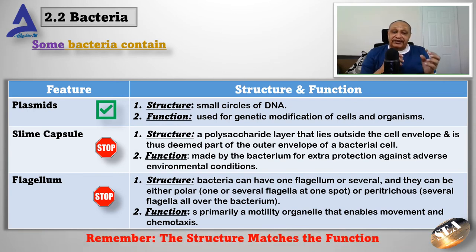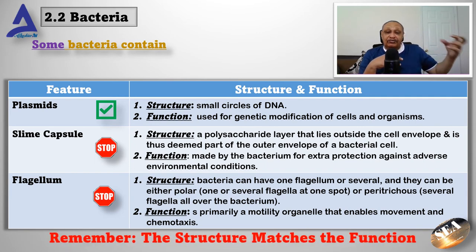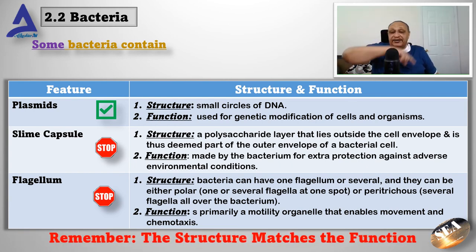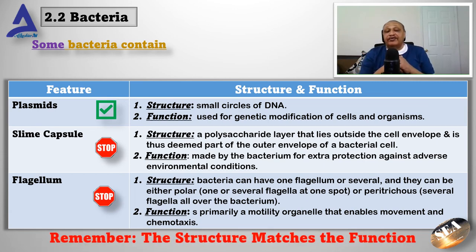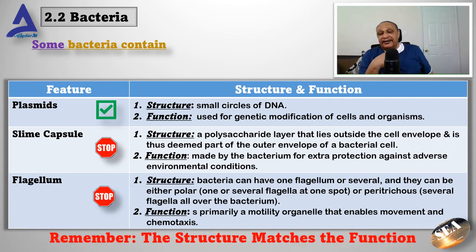Flagellum: bacteria can have one flagellum or several. They can be either polar — meaning one or several flagella at one spot or one pole of the bacterium — or peritrichous, meaning several flagella all over the bacterium surrounding the bacterial cell. Flagella are primarily motility organelles and are also important for chemotaxis — the attraction of bacteria to other cells, food, or chemical triggers.